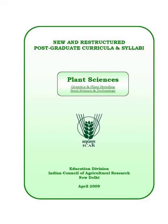Unit 3: Seed Processing. Principle of seed processing, processing sequence for different crops, layout of seed processing unit, seed drying principles and methods, pre-cleaning, grading, upgrading, seed treatment and packaging. Working principle of seed processing machines: air-screen cleaner, specific gravity separator, indented cylinder separator, and seed treater. Seed quality maintenance during processing, seed enhancement techniques: seed coating, pelleting, and priming.